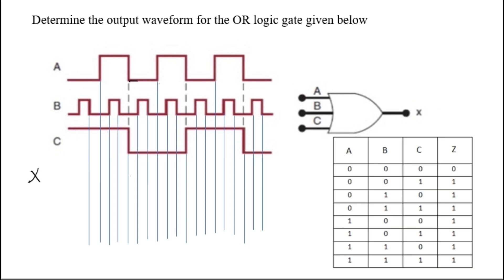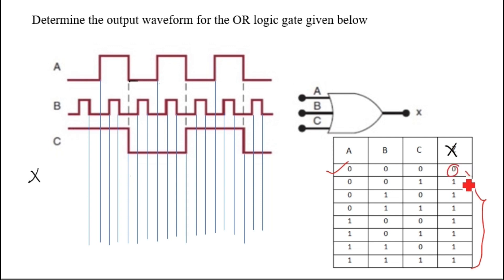The best way to do this kind of question is to draw the truth table. This is a truth table of the three-input OR gate, and you can consider Z as X here. The pattern is: when all the inputs are 0, only then you get output 0. In all other cases you get output 1.